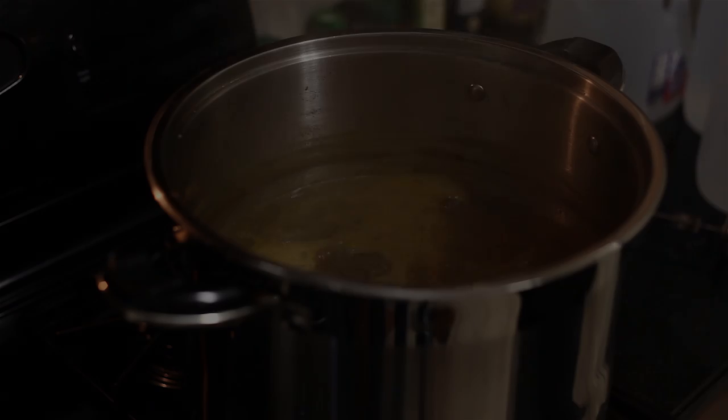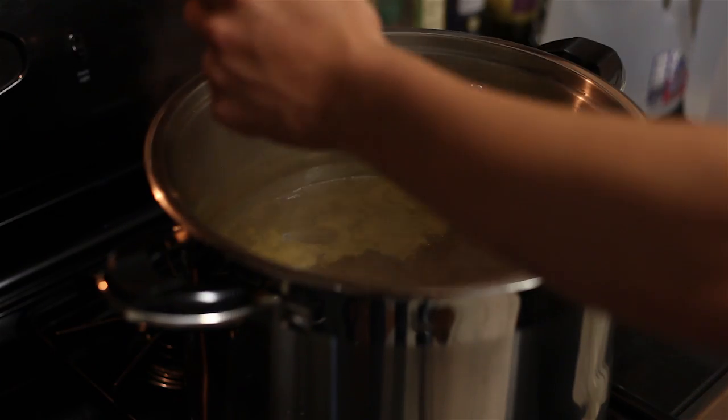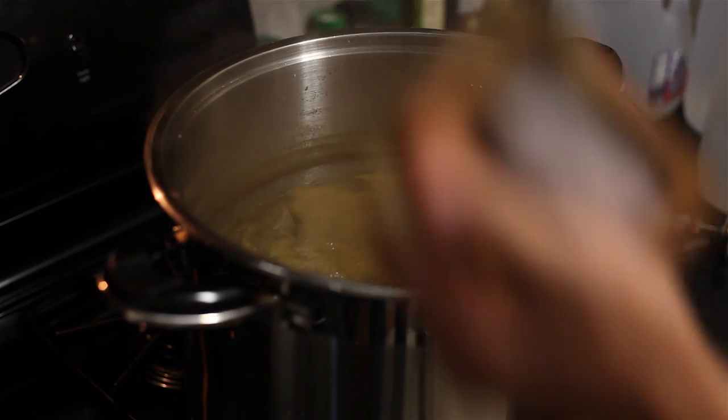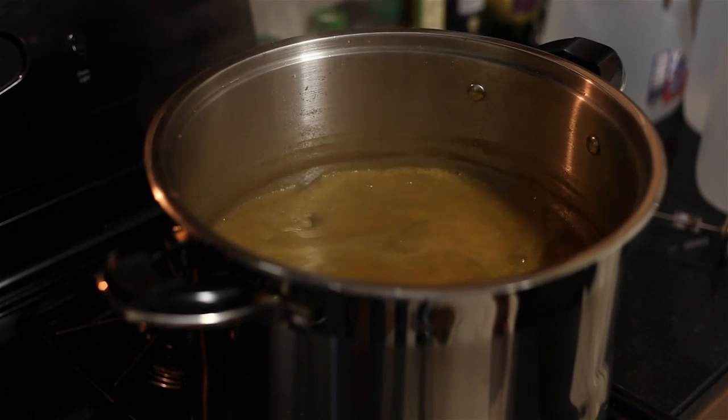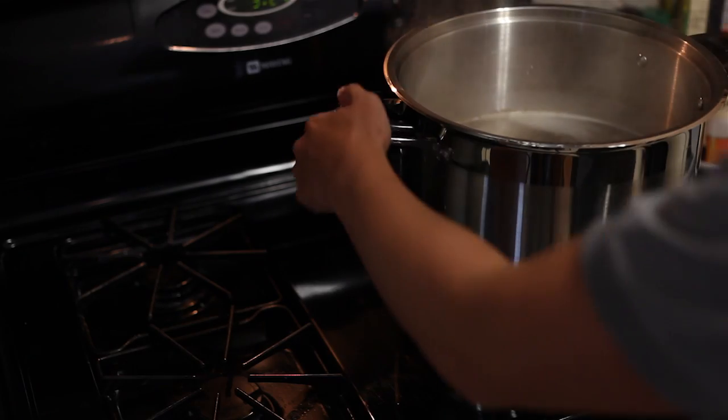If the recipe calls for flavoring hops, add them to the boil after 45 minutes have elapsed. If there are aroma hops, add them after 55 minutes have elapsed. Once the entire boil time has elapsed, remove the pot from the heat source and prepare to cool the wort.